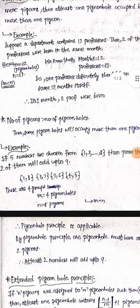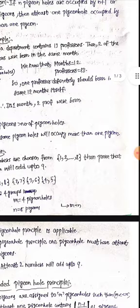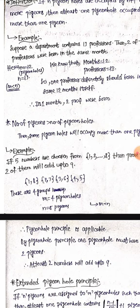See another example. If 5 numbers are chosen from the set 1, 2, 3, and so on up to 8, then prove that 2 of them will add up to 9. First, note down the possibilities whose sum is 9.